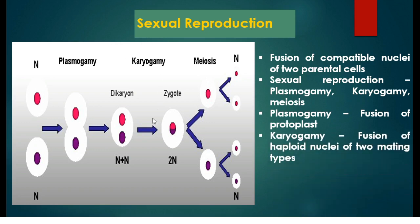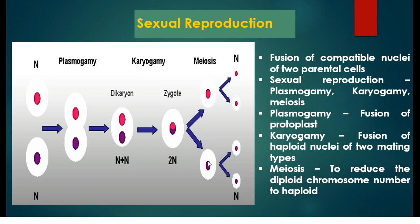Plasmogamy is followed by karyogamy. In karyogamy there is fusion of haploid nuclei of two mating types and the number of chromosomes becomes 2n. The zygote formed by the fusion of two parental cells will have 2n chromosomes. The zygote will then undergo meiosis to reduce the diploid chromosome number to haploid. As a result of meiosis 1 and meiosis 2, four haploid nuclei will be produced.